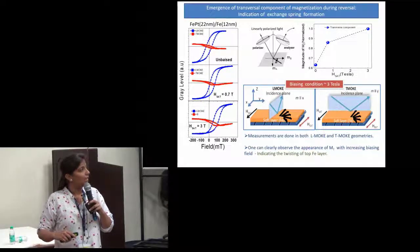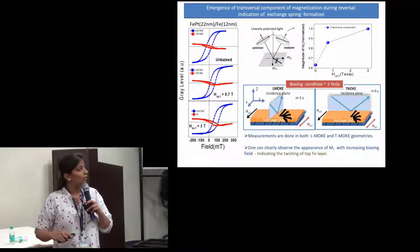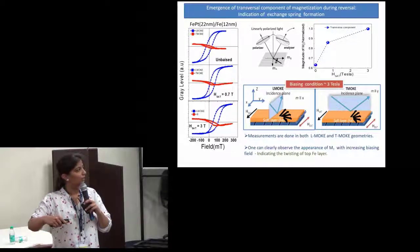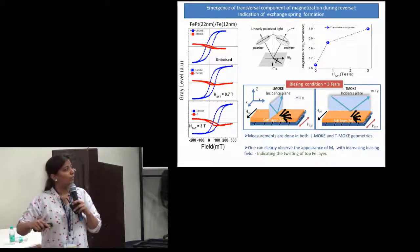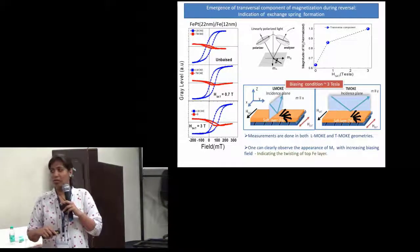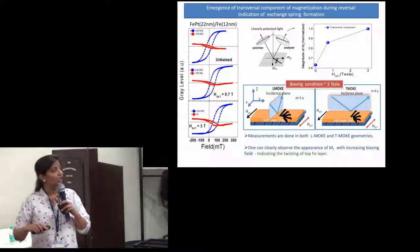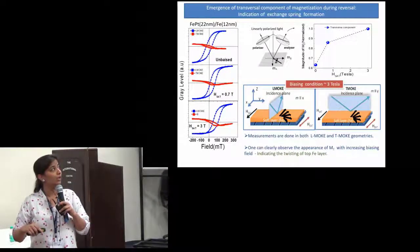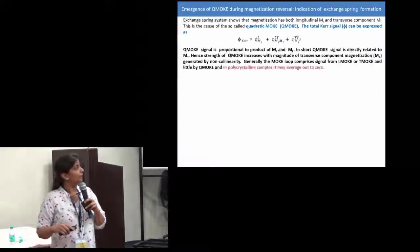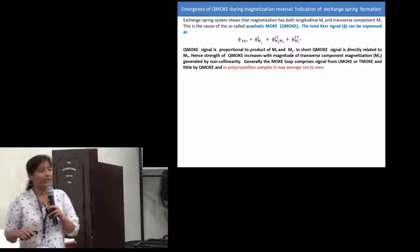In the longitudinal geometry we are measuring the component parallel to the applied field. The bias is in this component and the external field is applied accordingly. The iron layer is exchange-coupled with the FePt, and in the biasing condition there is a formation of an exchange spring of the iron with the external field. That is why a transversal component forms, and why the transversal component increases with the saturating field.